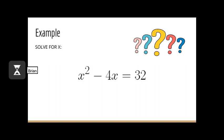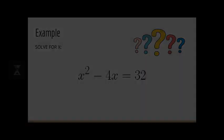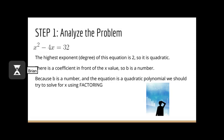For our example, let's take x squared minus 4x equals 32 and solve for x. The first step to factoring is to analyze the problem. Notice that the highest exponent of this equation is 2, so it is quadratic. Also, there is a coefficient in front of the x value, so b is a number. Therefore, because b is a number and the equation is a quadratic polynomial, we should try to solve for x using factoring.